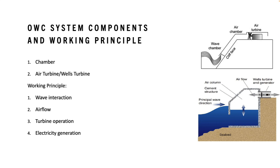The OWC system consists of a partially submerged chamber or structure located near the shoreline. The primary components include the chamber, which is the main structure of the OWC system, usually constructed of reinforced concrete and designed to withstand the forces exerted by the waves. The chamber is open at the bottom and submerged in water, allowing waves to enter and exit freely.